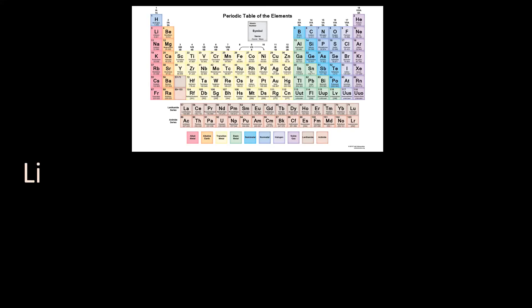If we look at lithium — lithium is in the second energy level. We know the first energy level has one s orbital and there are two electrons in it. And then lithium is in the second energy level, so two s, and it's the first one in the s's, so it's going to be 2s¹. One way you can double-check is two plus one equals three. Lithium has three electrons, which in a neutral atom also means it has three protons. Lithium has an atomic number of three, so that would be correct.